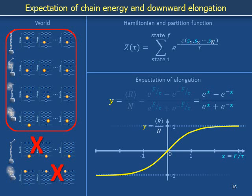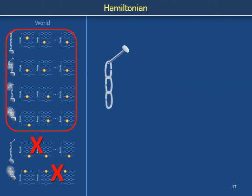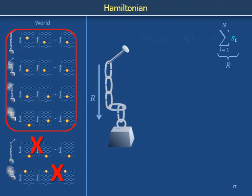In this video we will write down the partition function for the ideal chain described in the previous video. We use capital R to denote the downward displacement of the weight from the nail. Capital R is the sum of the tail-to-head displacements of the individual links of the chain. It takes on its greatest value capital N when all links point downward, and its most negative value minus capital N when all links point upward. Values of capital R more positive or more negative than these are not possible without breaking the chain.